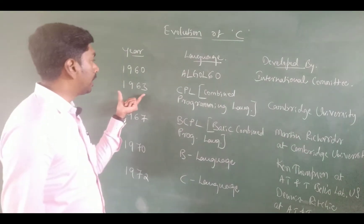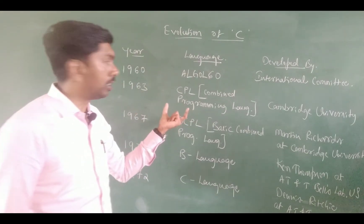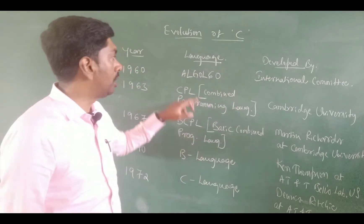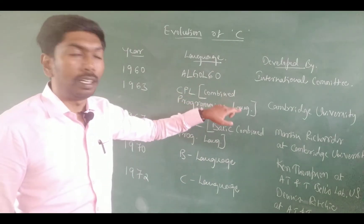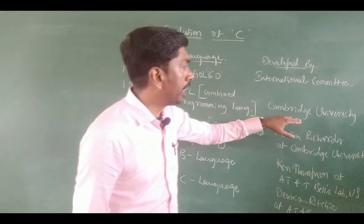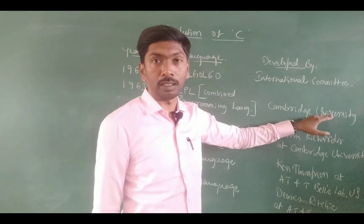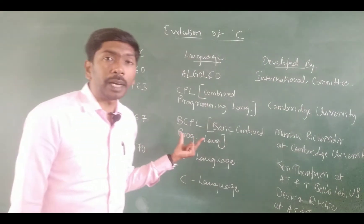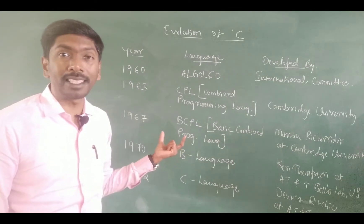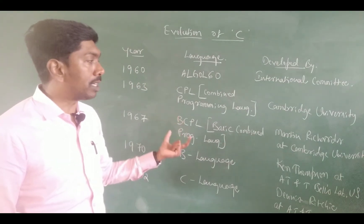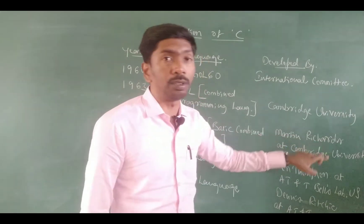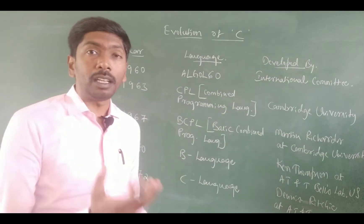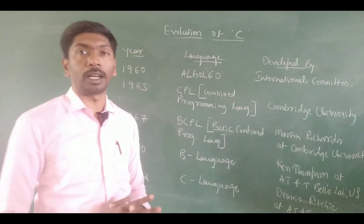After that, in the year 1963, CPL — Combined Programming Language — was developed by Cambridge University. Then in the year 1967, BCPL — Basic Combined Programming Language — was introduced, developed by Martin Richards at Cambridge University.